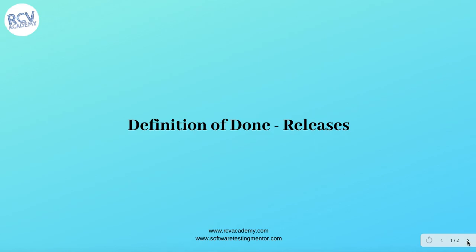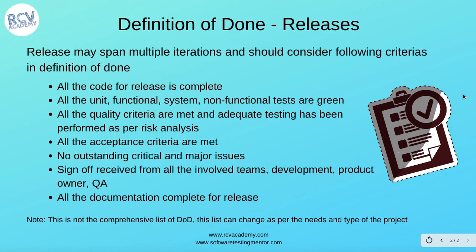In agile software development, a release may span multiple iterations or sprints. When defining the definition of done for releases, you should consider several key criteria that we are going to discuss in this tutorial. A release will typically have multiple sprints — approximately six sprints, or a three-month cycle — and in those releases you release the software to production. In agile, you can also release very frequently depending on what frequency your organization is following.